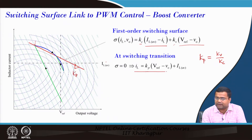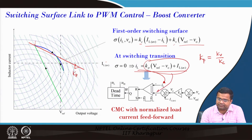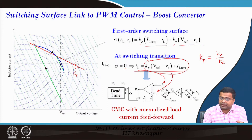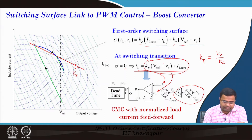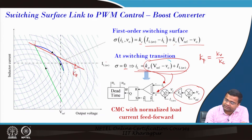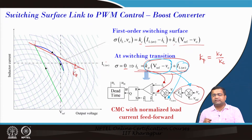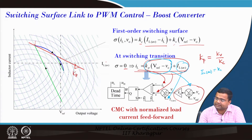This equation indicates that the inductor current is compared with the rest of the quantity. At the point of switching they are equal and the expression becomes zero — that is the switching law. There is a proportional control into error voltage contributed by this term. The average inductor current for the boost converter is a normalized gain into load current.